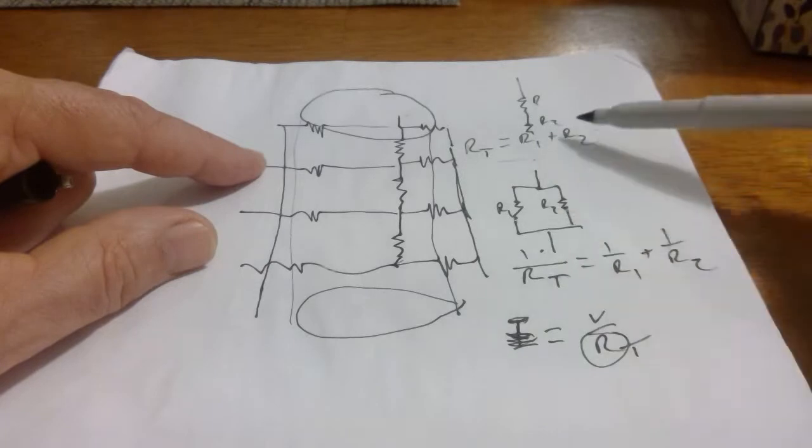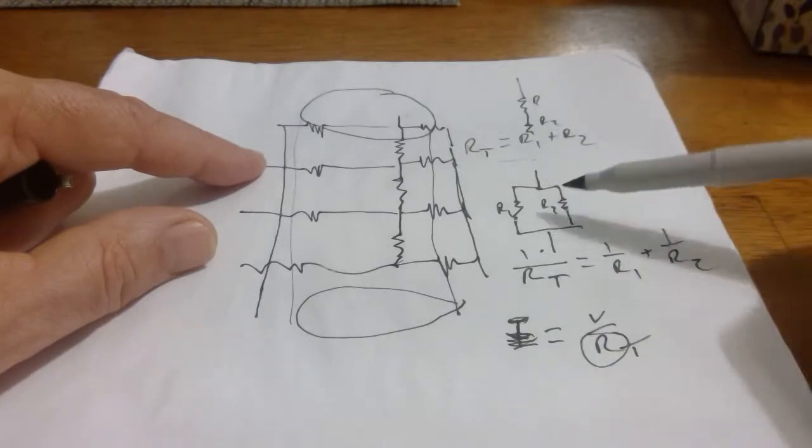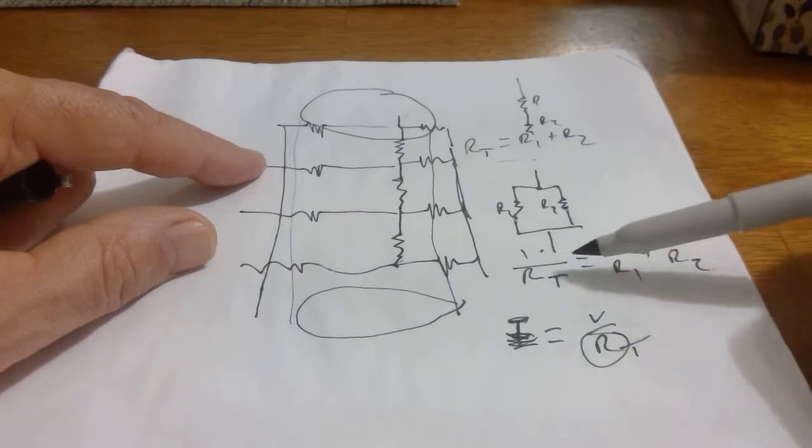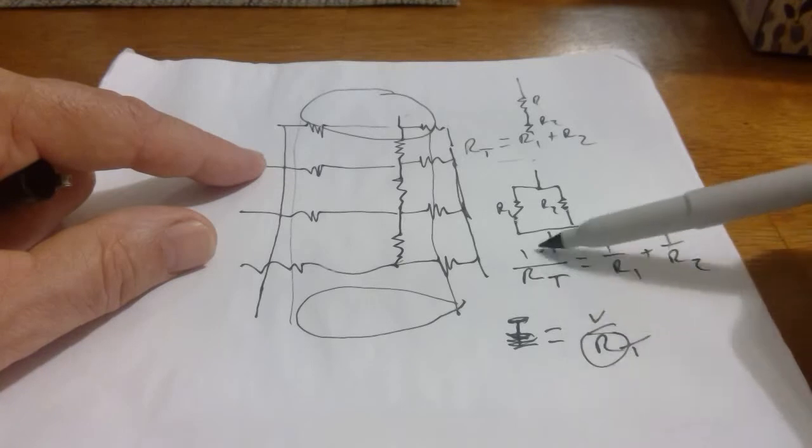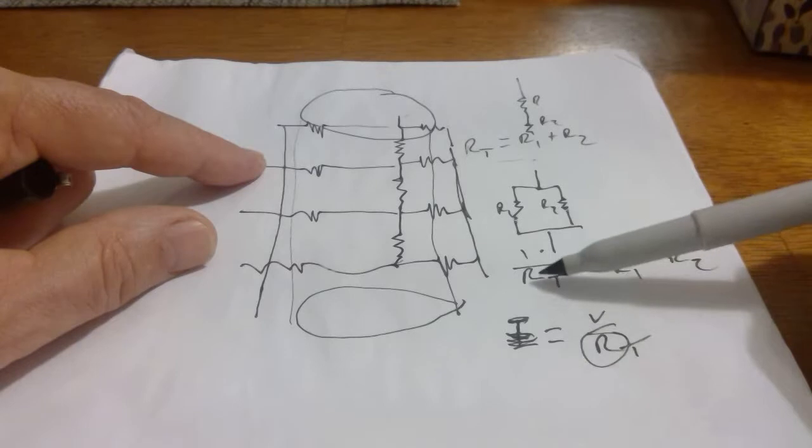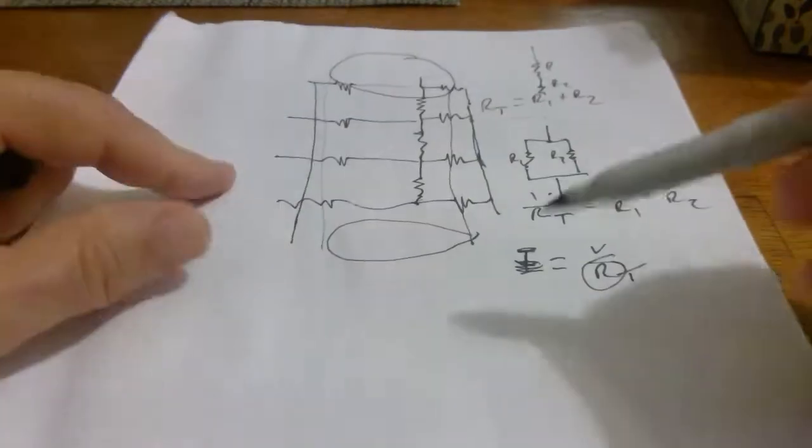And it does get a little complicated when you have a mixture of series and parallel. But the general concepts, we should know that series resistors add directly, parallel resistors add inversely, and 1 over RT is the way you get the R total. Then you can convert that R total, flip it over, you'll have the R total number, and then you can work out the math accordingly.